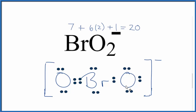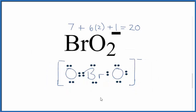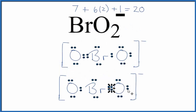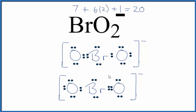Let's talk about resonance for just one second. We could draw an equally valid Lewis structure where the double bond is over here, giving us something that looks like this. It's the same thing — just instead of having the double bond on one oxygen, we have it on the other. These are called resonance structures. In reality, it's kind of an average of these two structures, giving a 1.5 bond between the oxygens. These are the two resonance structures for BrO2 minus.